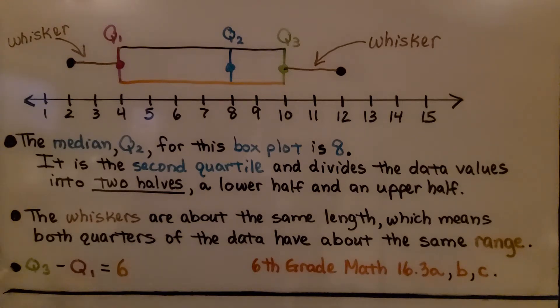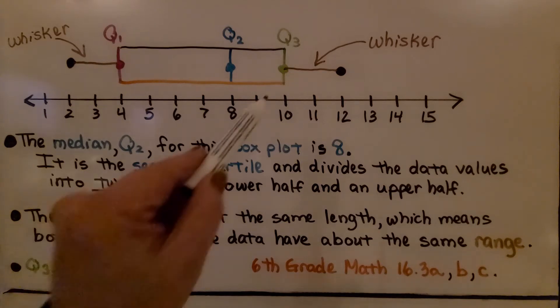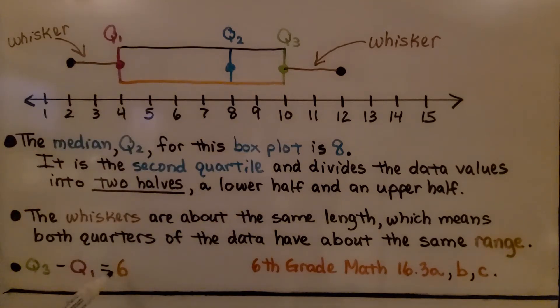We have Q3 minus Q1. We would have 10 minus 4. We know the interquartile range is 6. Now we did learn this in sixth grade math last year, and I'm going to have links to 16.3 A, B, and C where we learned a lot of this.